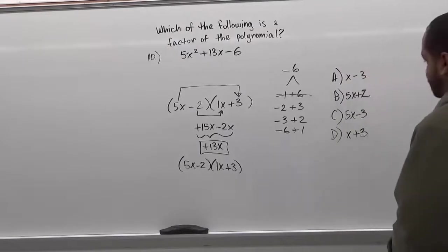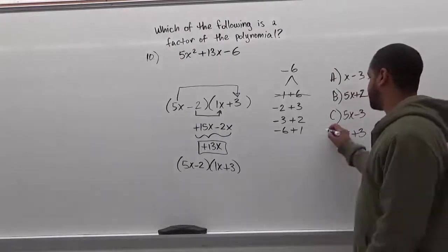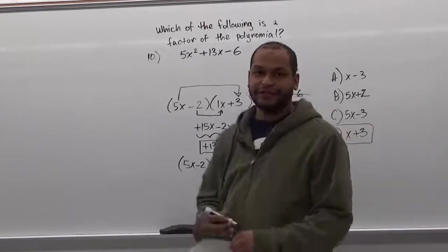Now here we see our factors and the correct solution for this is going to be D, x plus 3. This is exactly what we have here.